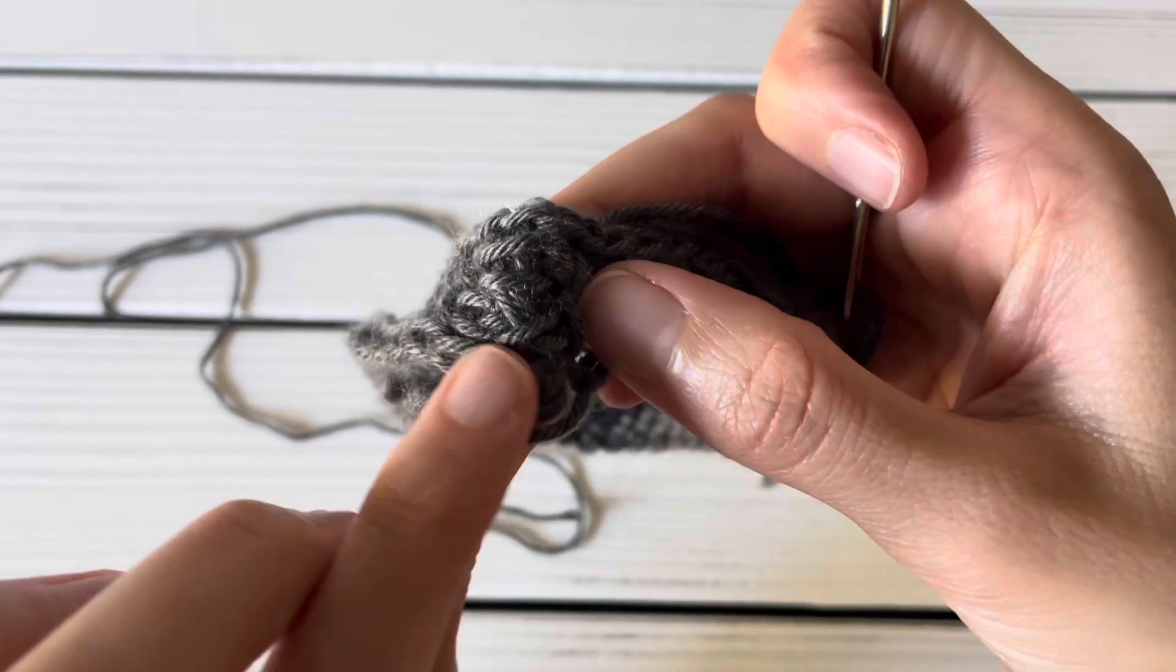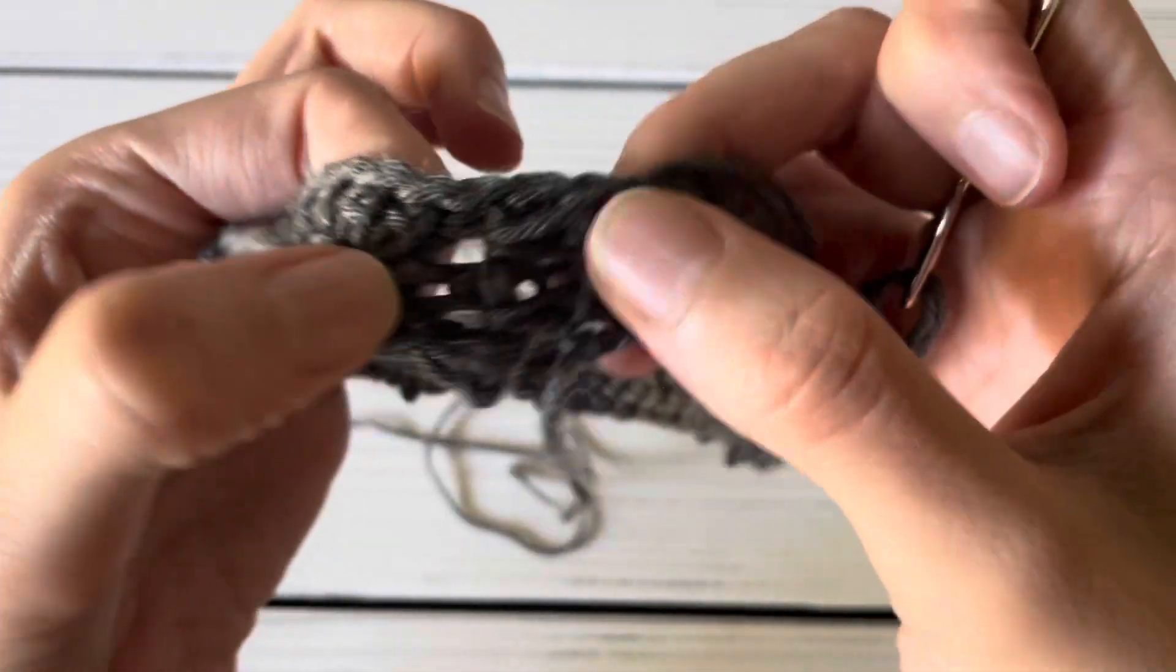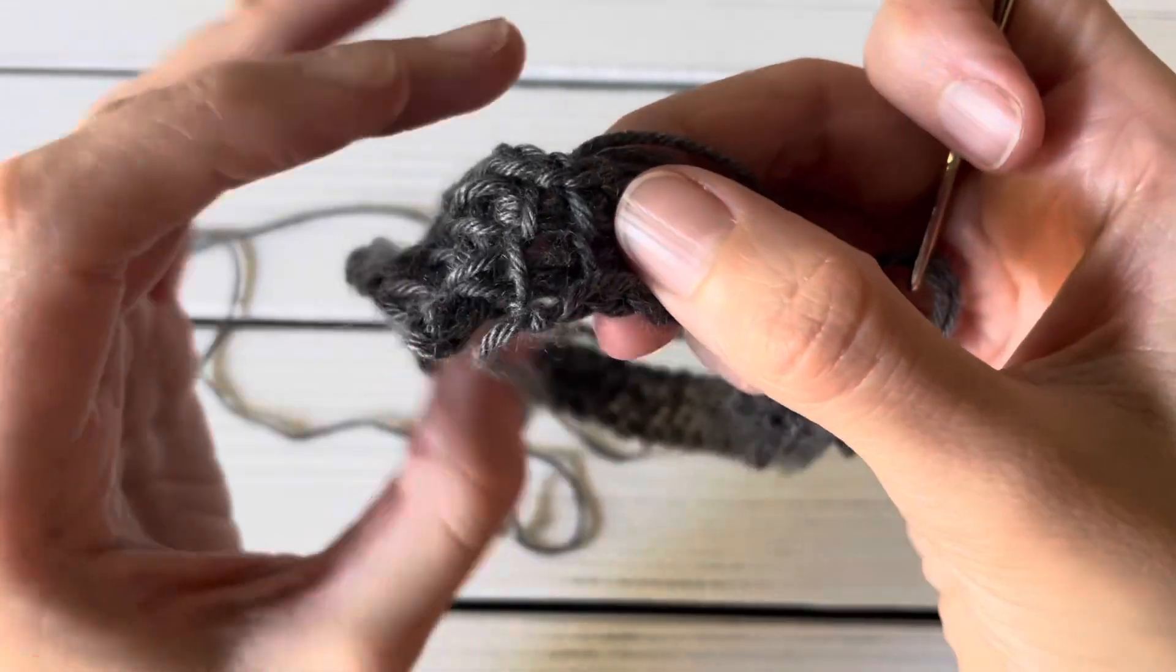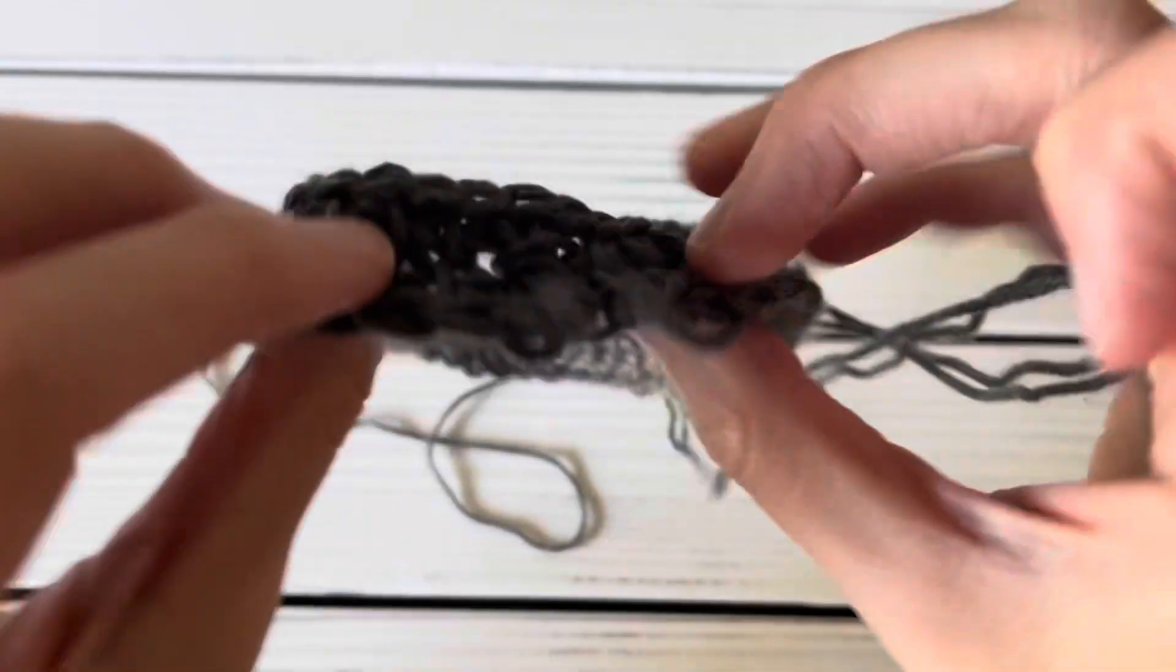And then I do the same thing with the bottom tail end. It is not seamless, you can kind of tell where the seam is, but it is a flat seam.